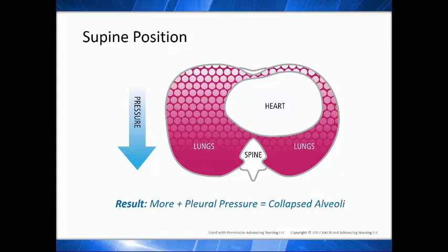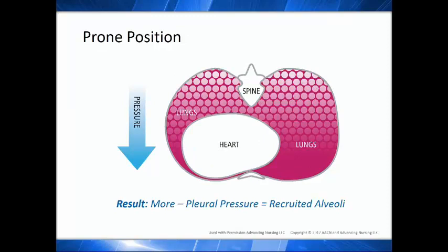Just a brief overview of the physiological rationale. When lying flat, the compressional forces of the heart push on the lung against the spine — you get a squeeze effect. As a result, pleural pressure increases and becomes more positive, leading to collapse. When you turn somebody into the prone position, you're on the xiphoid — a smaller bony prominence — so only about 4% of lung tissue is under compressional forces versus 17% supine. As a result, pleural pressure stays more negative, and that's where you get recruitment.